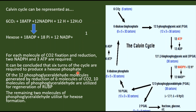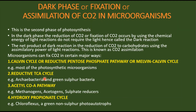It can be concluded that six turns of the cycle are required to produce one hexose phosphate — meaning six molecules of carbon dioxide give rise to one molecule of glucose or fructose. Of the 12 glyceraldehyde 3-phosphate molecules produced, 10 are utilized for regeneration of ribulose bisphosphate, and 2 are used for hexose formation. This is the overall reaction of the Calvin cycle — the first pathway by which microorganisms fix carbon dioxide, also called the reductive pentose phosphate pathway or the Melvin-Calvin cycle.